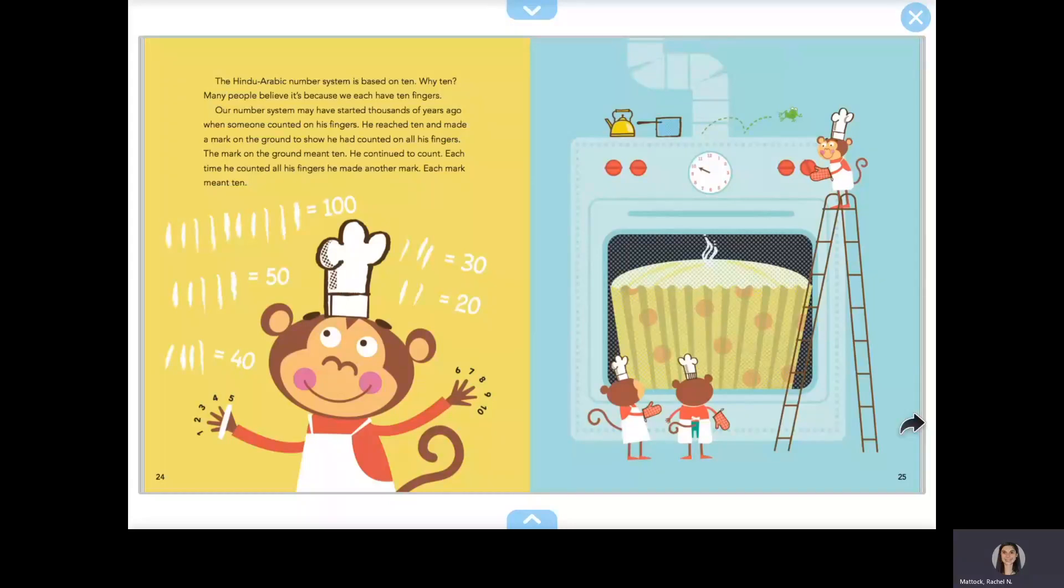Why ten? Many people believe it's because we each have ten fingers. Our number system may have started thousands of years ago when someone counted on their fingers. They reached ten and made a mark on the ground to show they had counted on all of their fingers. The mark on the ground meant ten. They continued to count. Each time they counted all their fingers, they made another mark. Each mark meant ten.